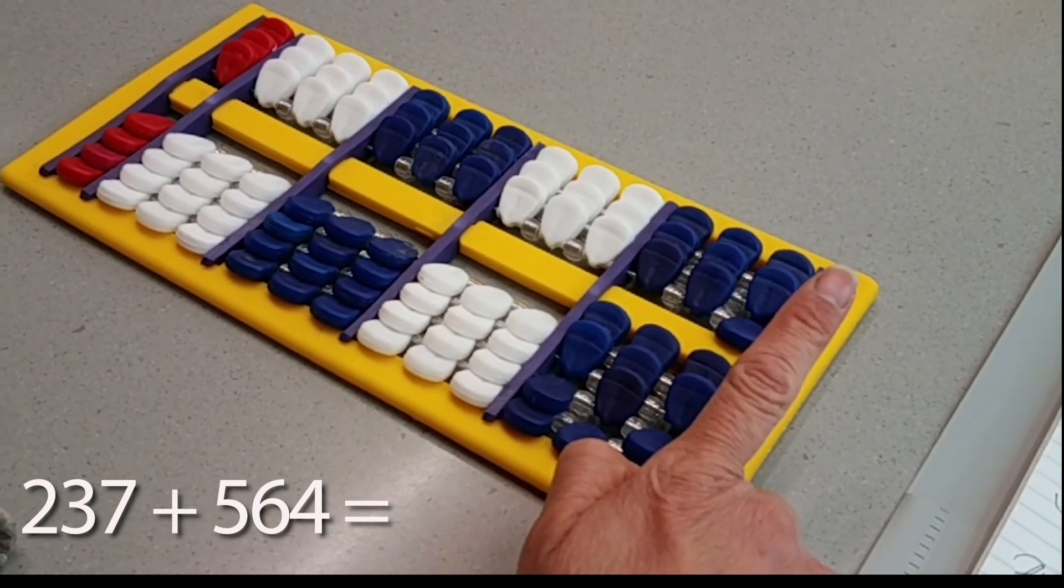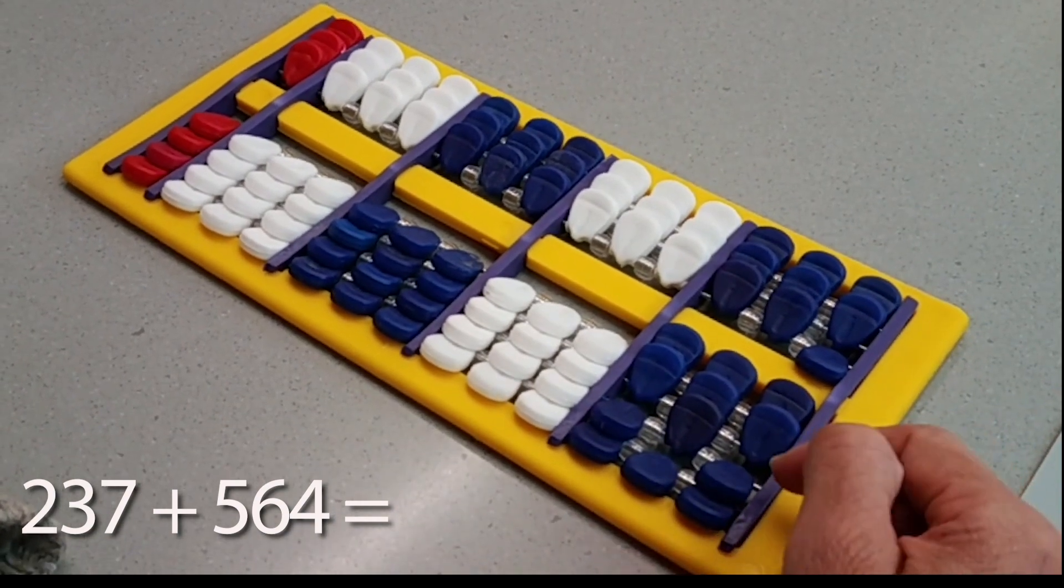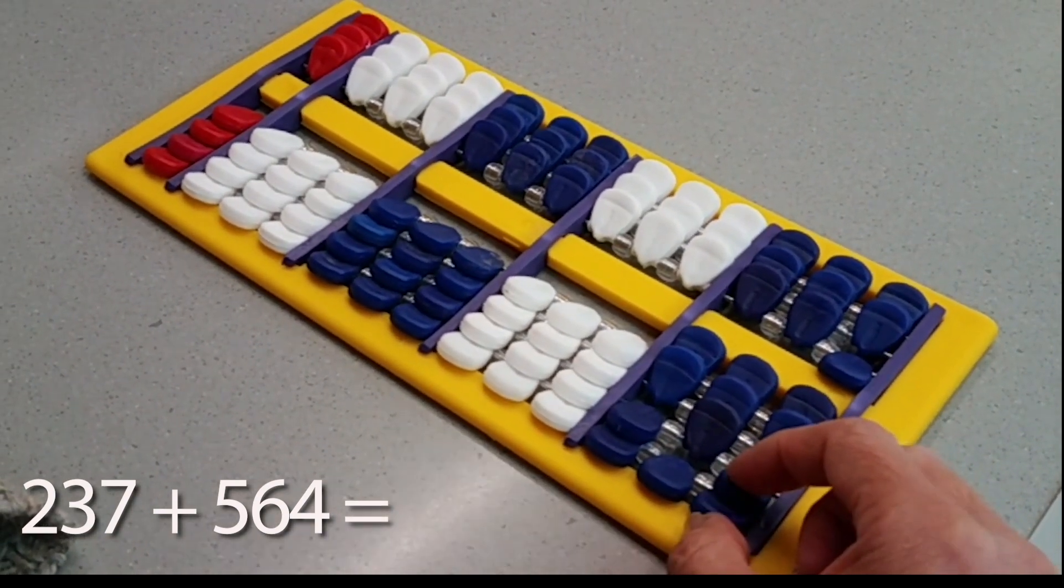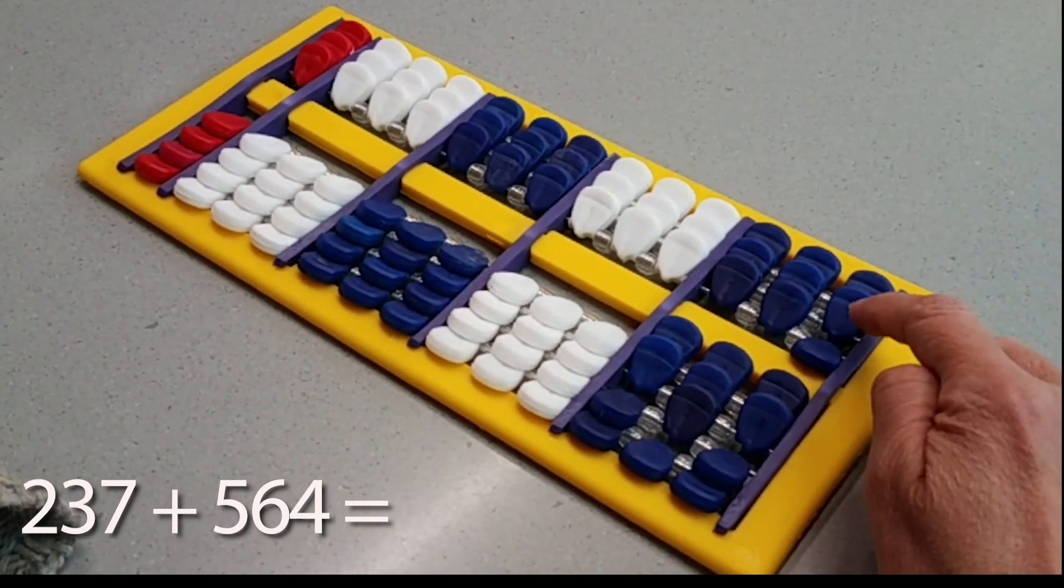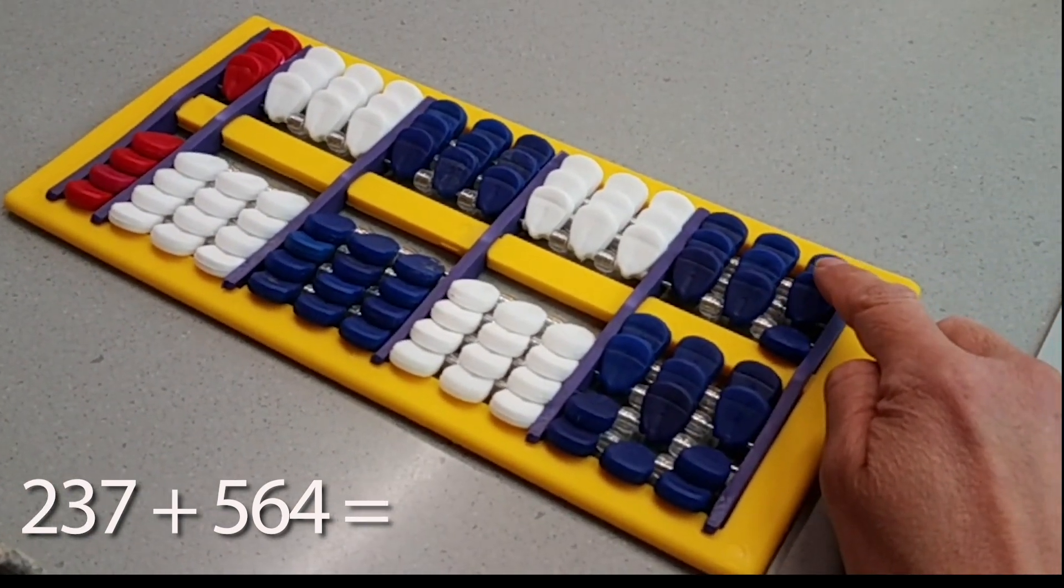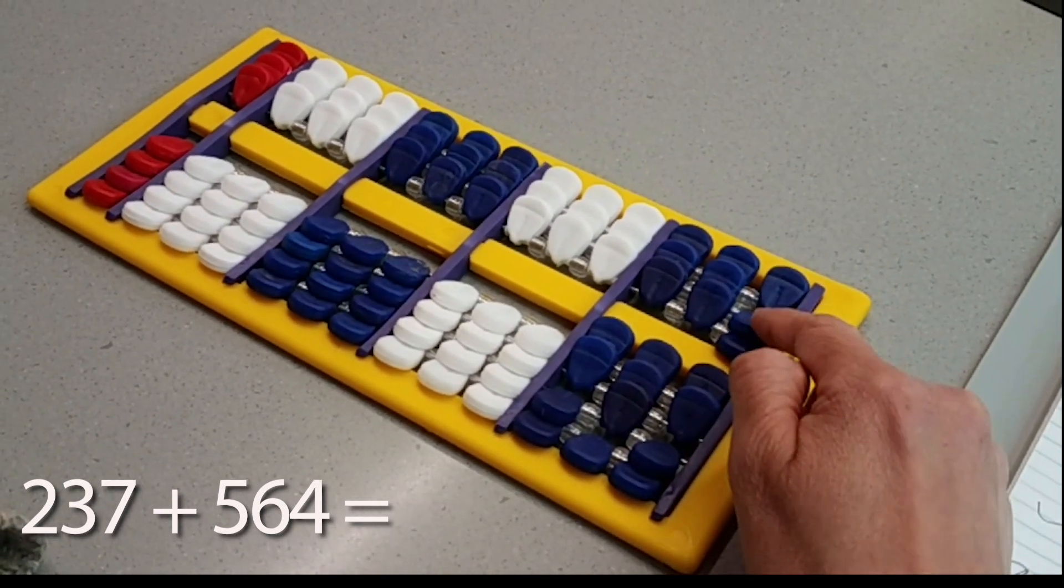So now what I want to do is I want to add on 564. So for me to add on four pieces, there's not enough kernels on the bottom half to add four. I only have two. But I have to remember that on the top, I have a five. So five minus one is going to give me the four I need. So I pull down a five and subtract off a one to give me the four I need.